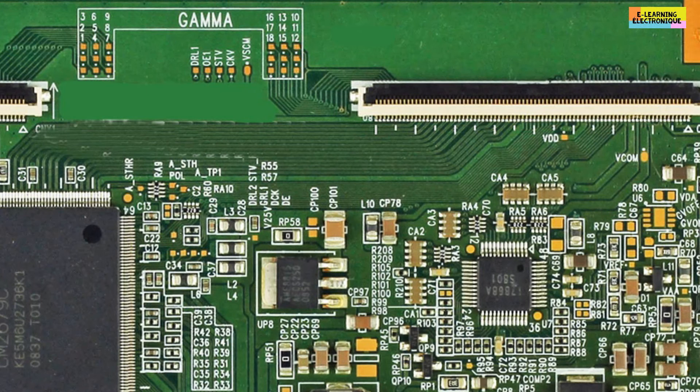The gamma chip on this T-Con board is recognizable by a series of clues. First, by the reference that is written on it. With this inscription one can find on the web the technical documentation or datasheet. Secondly, we note around the integrated circuit the presence of a multitude of resistors.